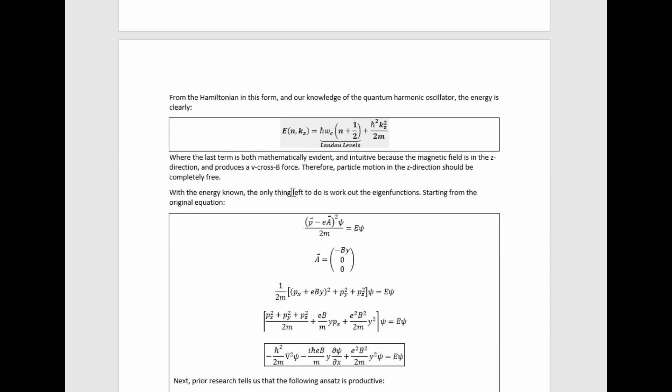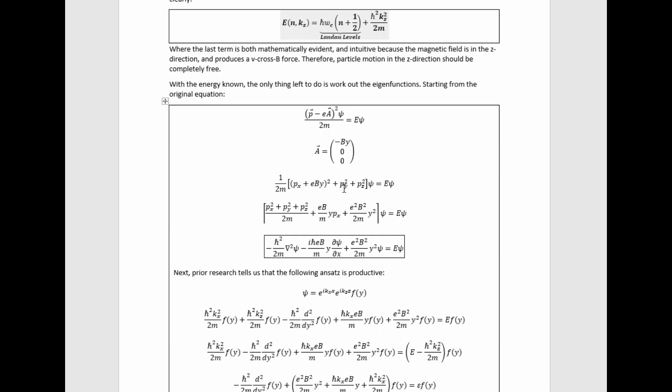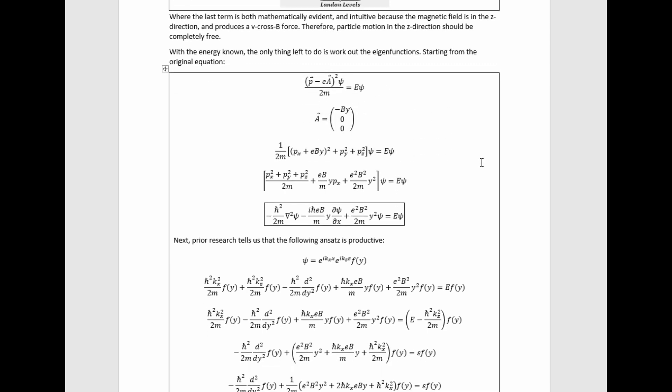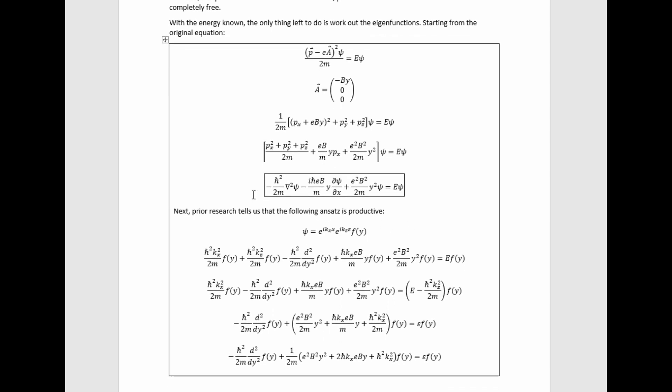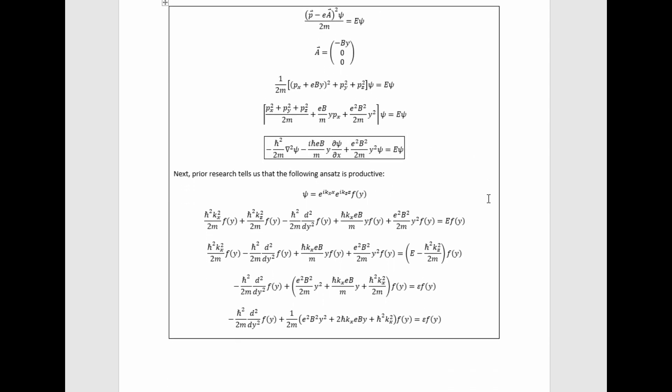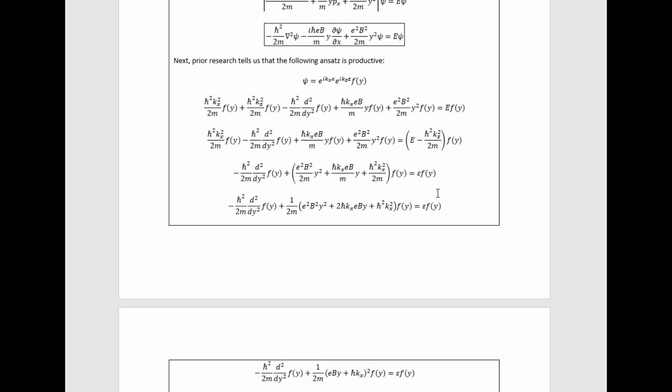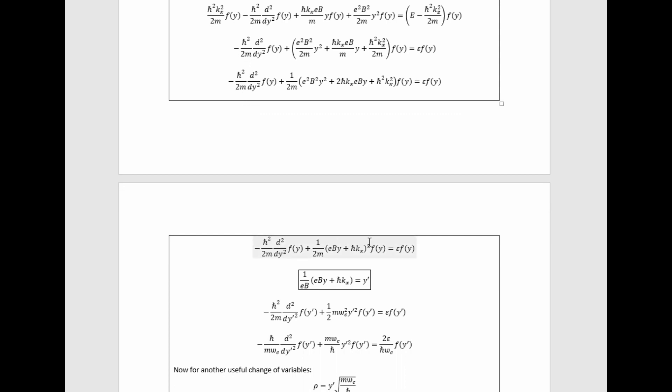With the energy known, the only thing left to do is to work out the eigenfunctions. So this is the Schrödinger equation that we got to by plugging this into there. Then we can rewrite this in an interesting way. Specifically, we can rewrite it like this, and then insert the momentum operator values, which gets us here. Then prior research tells us that this ansatz is actually quite constructive to insert, and perhaps it's not that surprising, given how much y dependence there is, that something like this would be effective. So if we plug that in, we ultimately arrive at this equation.